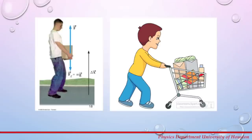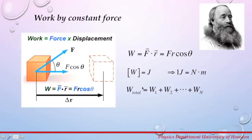In this experiment we will look at the relationship between the change in mechanical energy of a system and the work done by a non-conservative force. When we lift a box at home or push a cart in a store, we do work. The work done by a constant force is given by the equation: it's a dot product between the force vector and the displacement vector,